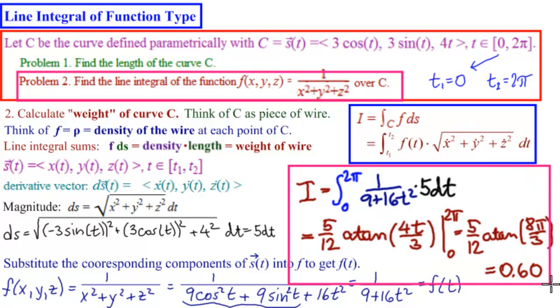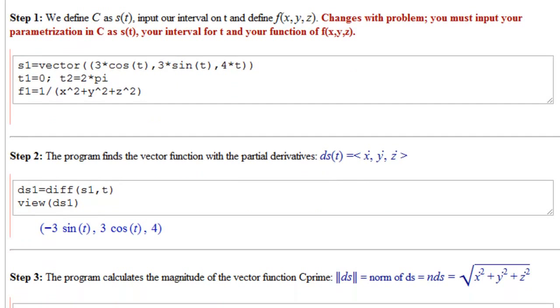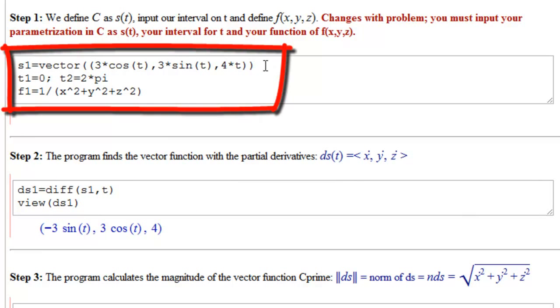So when you work this out, the answer to find the line integral of this function here over C gives us approximately 0.6. This is actually pretty interesting to look at what it means. So we're going to go do that now. So here we are in Sage notebook solving our second problem. And down here, we input our vector parametrization of the curve, just as above. We input our interval from 0 to 2π here. And now we're putting in the function. Before we had 1 because we had arc length. And now we're putting in our function 1 over the sum of x squared plus y squared plus z squared.